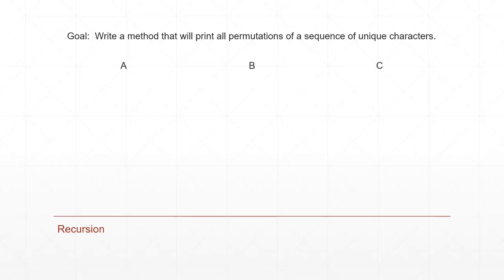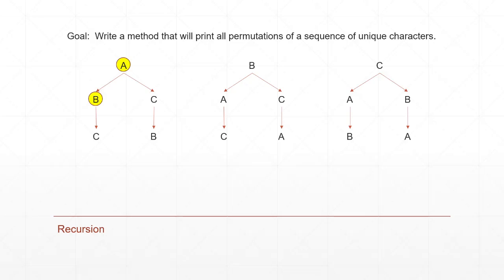For our first choice we can pick either A, B, or C. Let's say we pick A. If we pick A, our second choice is limited to either B or C. If we pick B, our next choice has to be C. If we pick C, our next choice has to be B. Let's step through a specific example — we decide to pick A first, so A is the first element we print. Then we pick B. Once we go down this path, we have no choice but to pick C next. After we pick C, there are no more letters, so we print our path: A, B, C. That's one permutation.